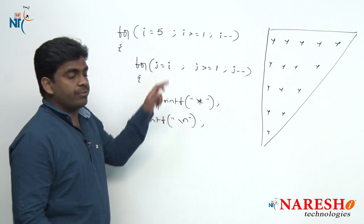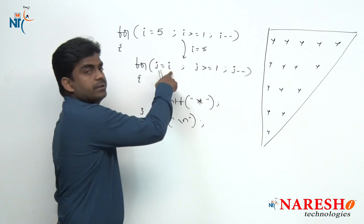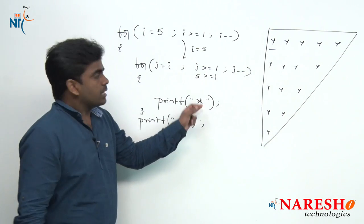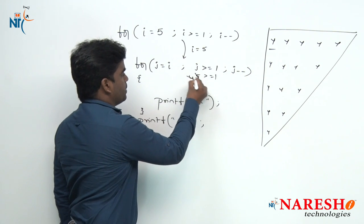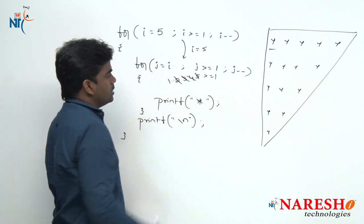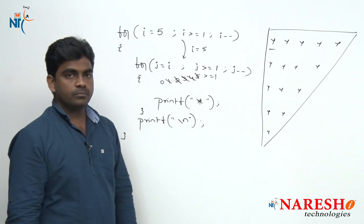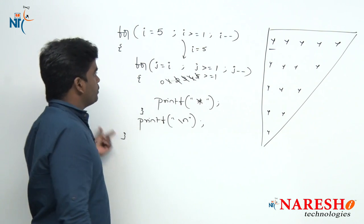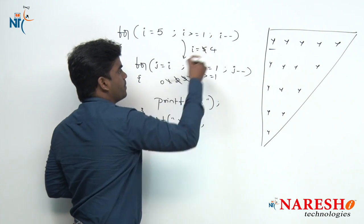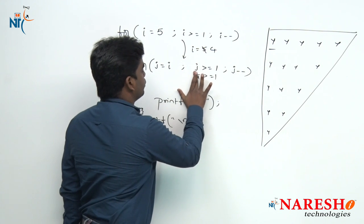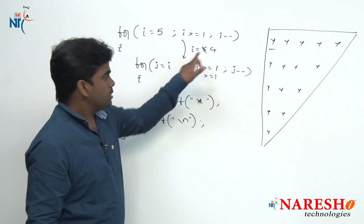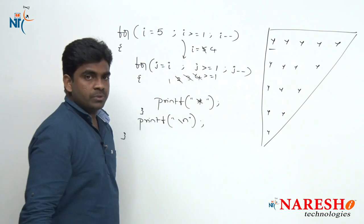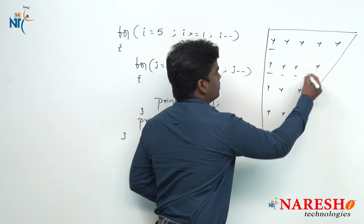I starts with 5 — 5 is greater than or equals to 1, condition true. J also starts with 5. J decrements: 5, 4, 3, 2, 1 — 5 iterations, so 5 stars print in the first row. Then control goes to next line and outer loop executes — I becomes 4. J starts with 4, and for 4 iterations (J = 4, 3, 2, 1) it prints 4 stars in the second row.